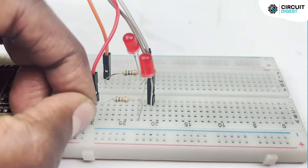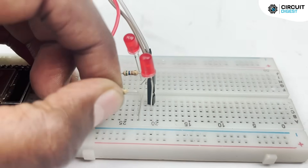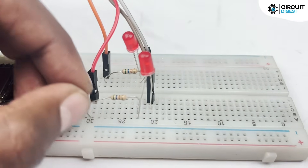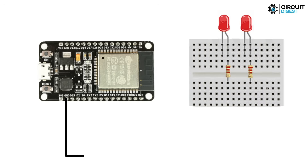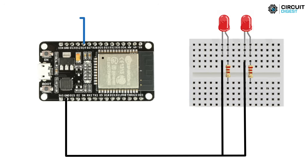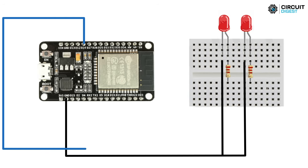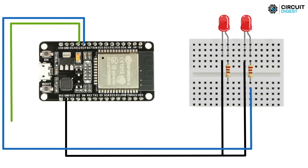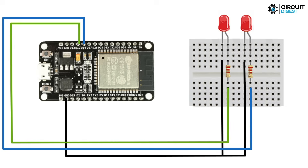We are going to connect the ESP32 and LED on a breadboard. The resistors are used to limit the current going through the LEDs. We will interface the ESP32 with 2 LED lights connected to GPIO pin 12 and 14. Connect one end of a 220 ohm resistor to GPIO pin 12 on the ESP32, connect the other end to the positive leg of one LED, and connect the negative leg of the LED to ground. Repeat these steps for GPIO pin 14 and the other LED light.